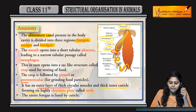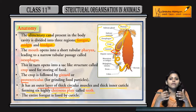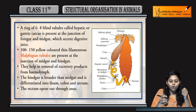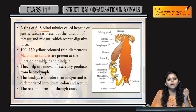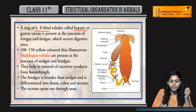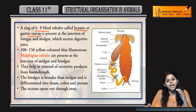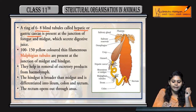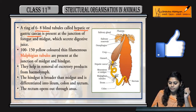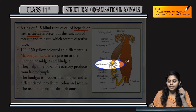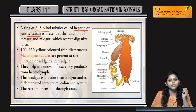From the pharynx to the gizzard comes the foregut. Next is a ring of six to eight blind tubules called hepatic caeca or gastric caeca, which are present at the junction of the foregut and midgut. The hepatic caeca secrete digestive juices.